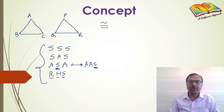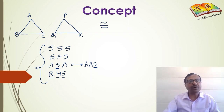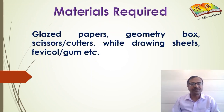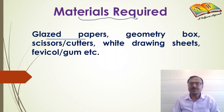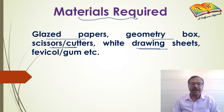The RHS rule stands for right angle, hypotenuse, and side — used for congruence of right angle triangles. All these rules can be used to prove two triangles as congruent, but here we are using an activity to demonstrate congruence. The materials required are glazed papers, a geometry box for measurements, scissors for cutting, white drawing sheets, and glue for pasting.